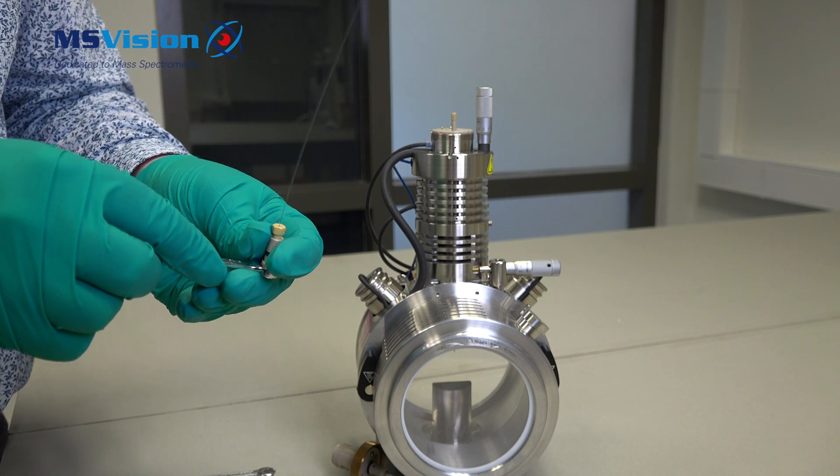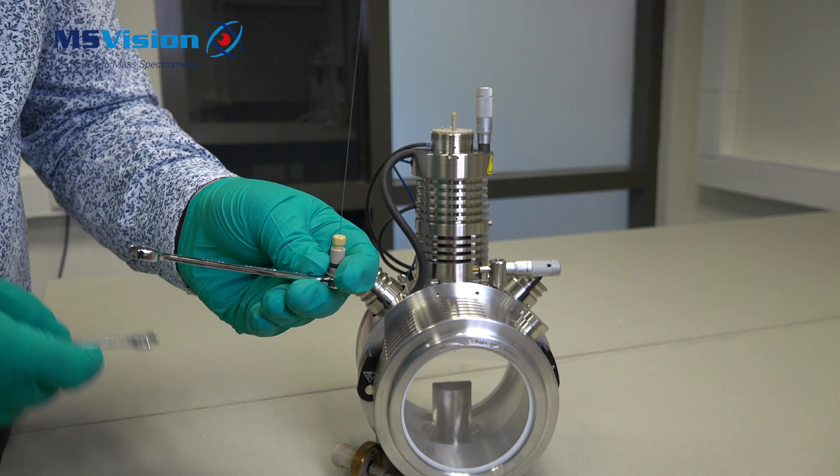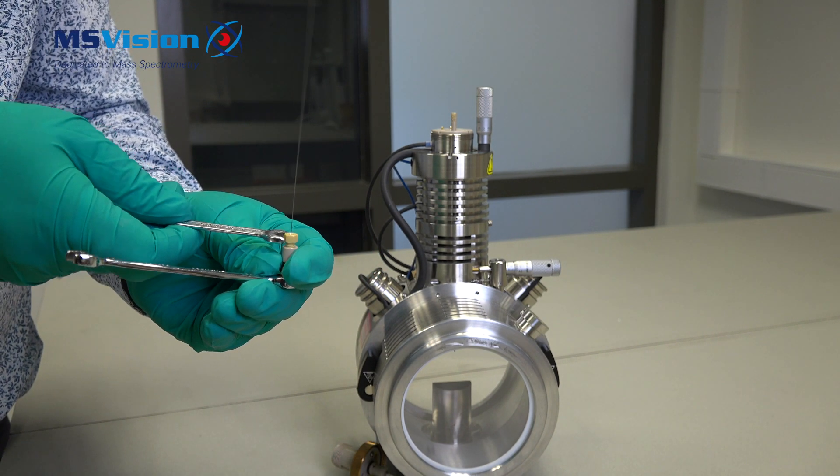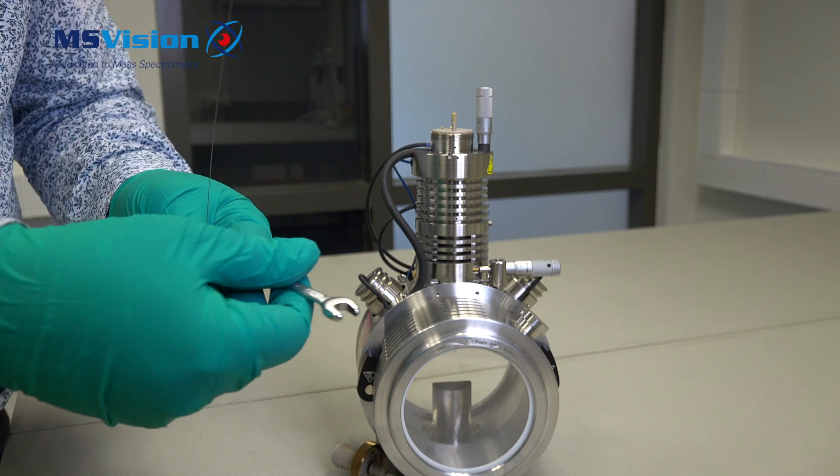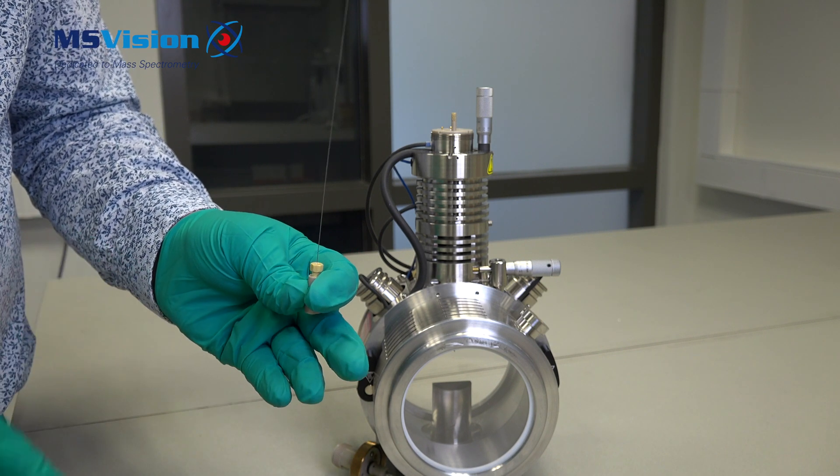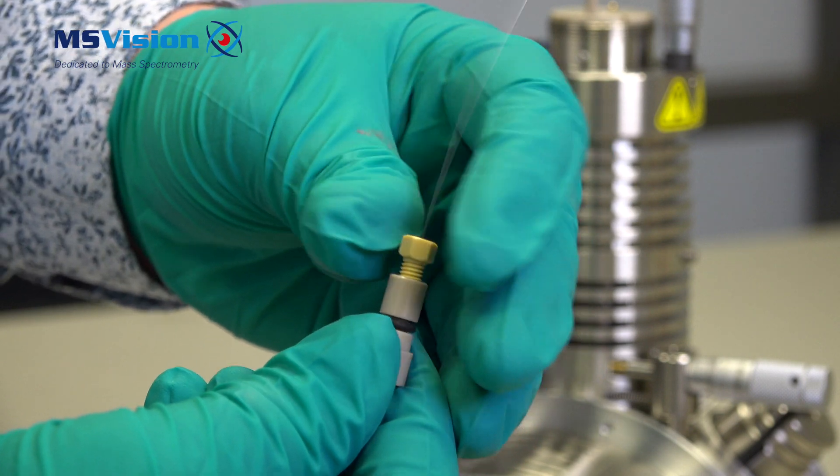Using two HPLC spanners, loosen the capillary as shown and unscrew the fitting. Remove the nut from the old capillary to use with the new one.